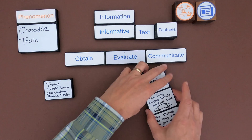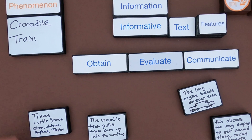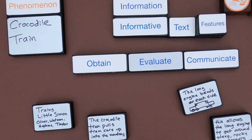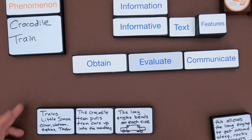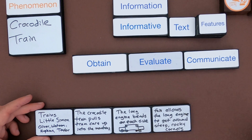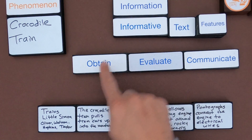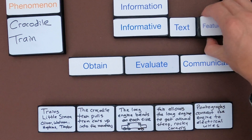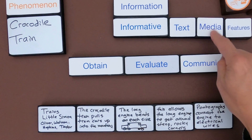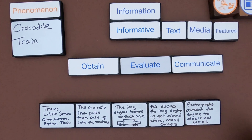I'm ready to communicate the information — I could do this in written text or just do it orally. According to 'Trains,' Little Simon, by Oliver, Watson, Hopkins, and Taylor: the crocodile train pulls train cars up into the mountains. It has a long engine that bends on each side, and this allows the engine to get around steep and rocky corners. On the top of the train, pantographs connect the engine to electrical wires. And so this is how you do obtain, evaluate, and communicate information. First step: do you have an informative text — you can use features to determine that. This works not just for informative texts, but for media as well. Then you obtain, you evaluate, you think about how you want to describe it, and then eventually you communicate it.